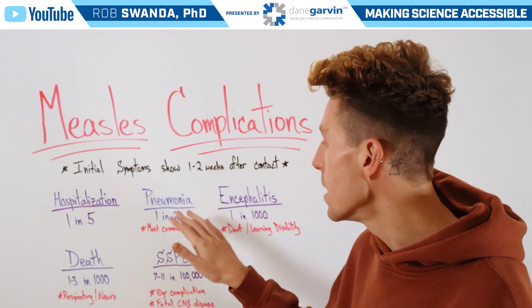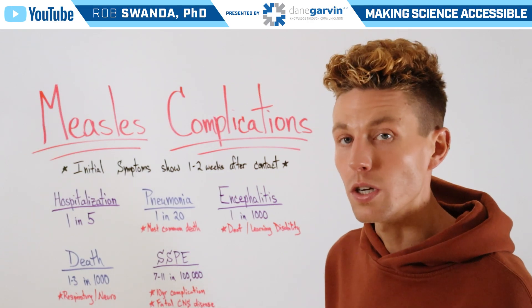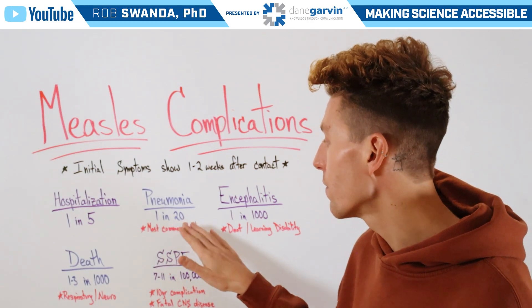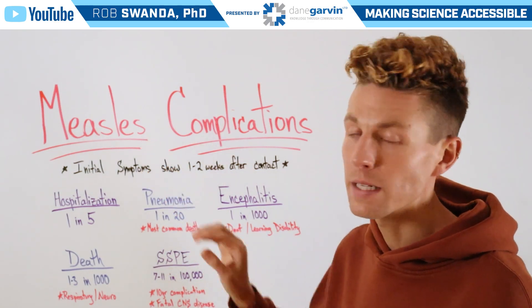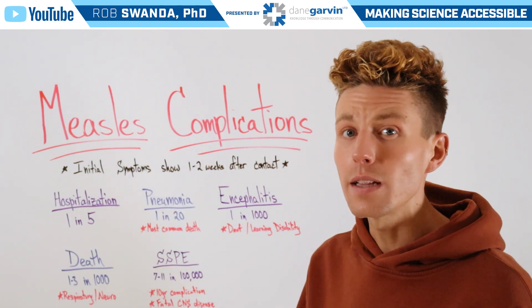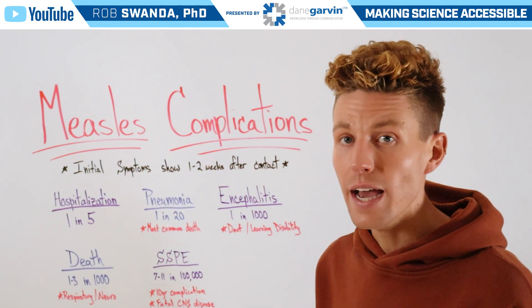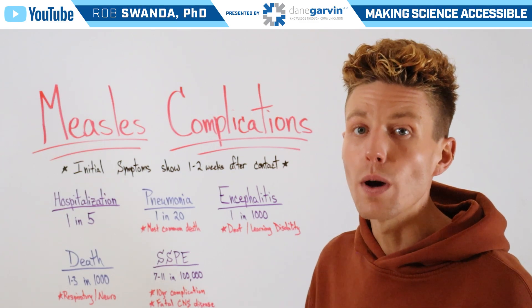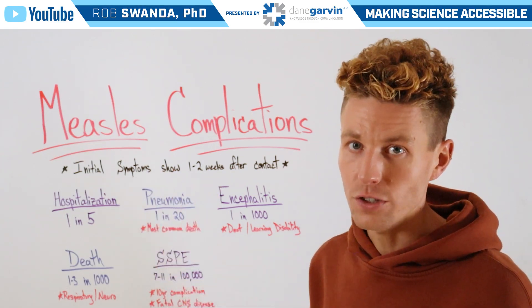The next would be pneumonia, which occurs in 1 out of every 20 measles cases, and is also the leading cause of death due to a measles infection.